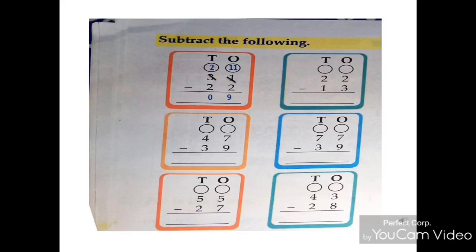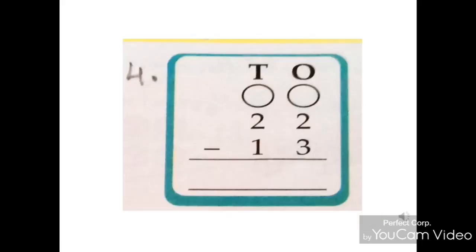Now see the first sum of second column. Here the numbers are 22 minus 13. Again let's subtract the 1's first. 2 is less than 3, so we cannot subtract 3 from 2.